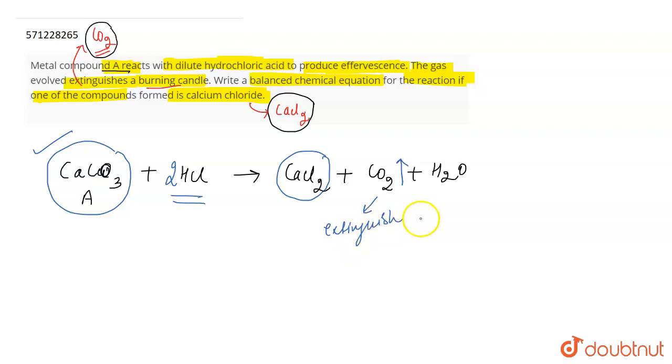It has the capability to extinguish fire and hence it can extinguish a burning candle, which confirms that the gas produced is carbon dioxide. This is the balanced chemical equation for the reaction which they have asked in the question.